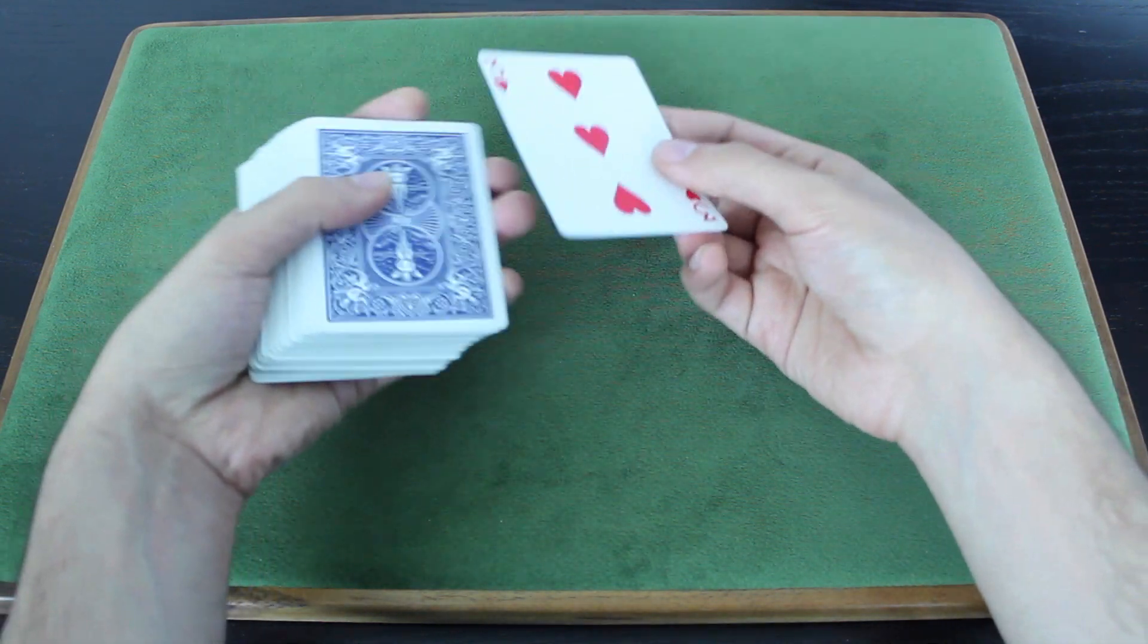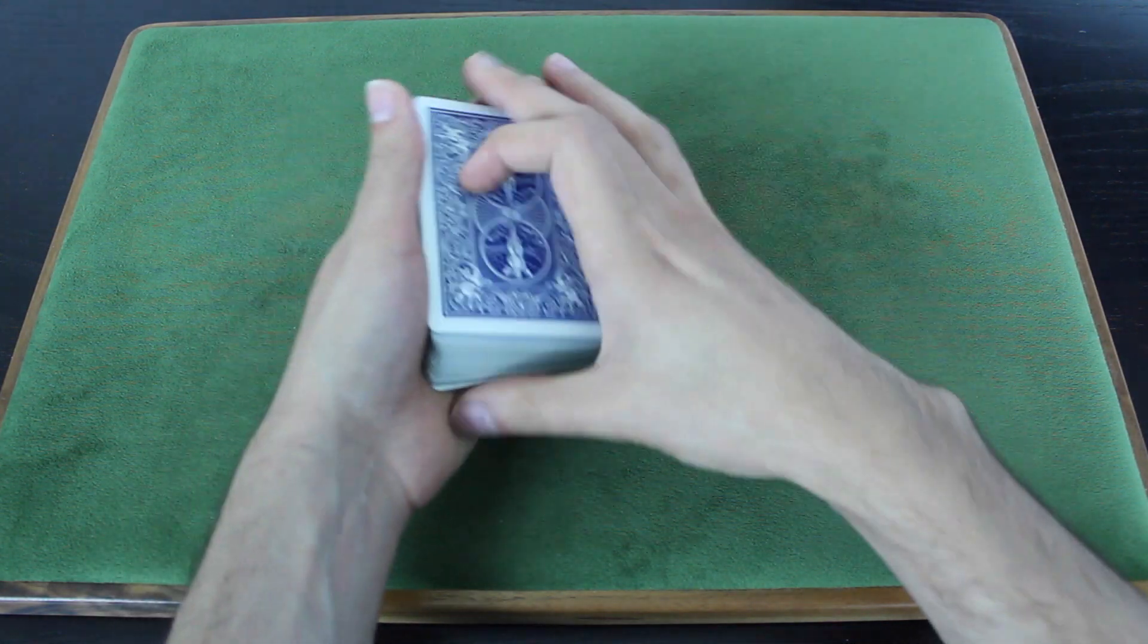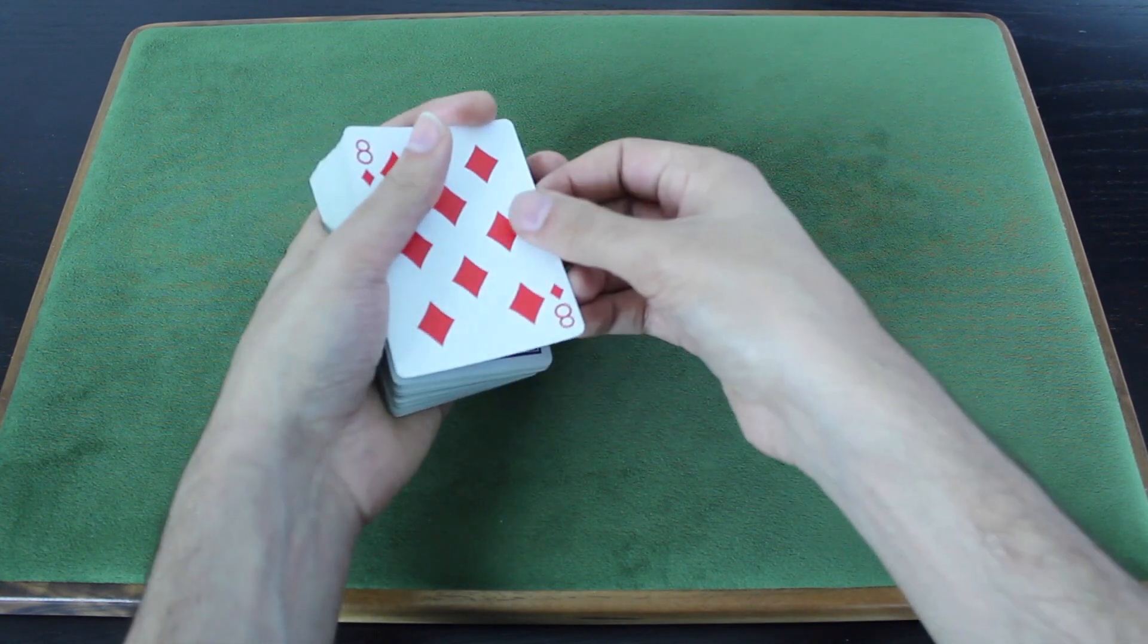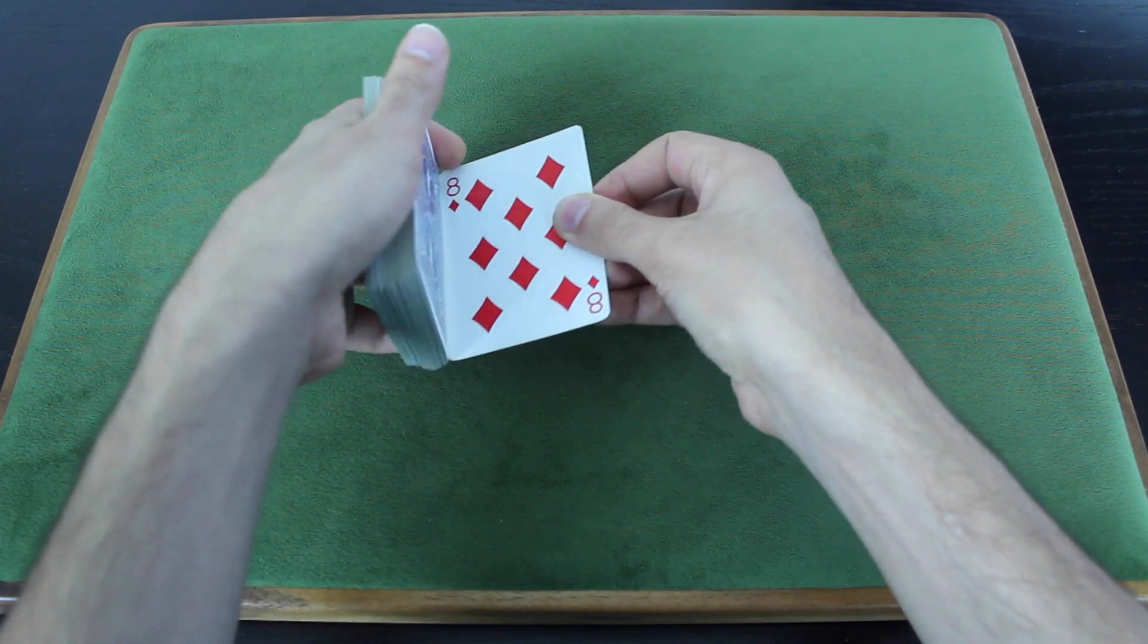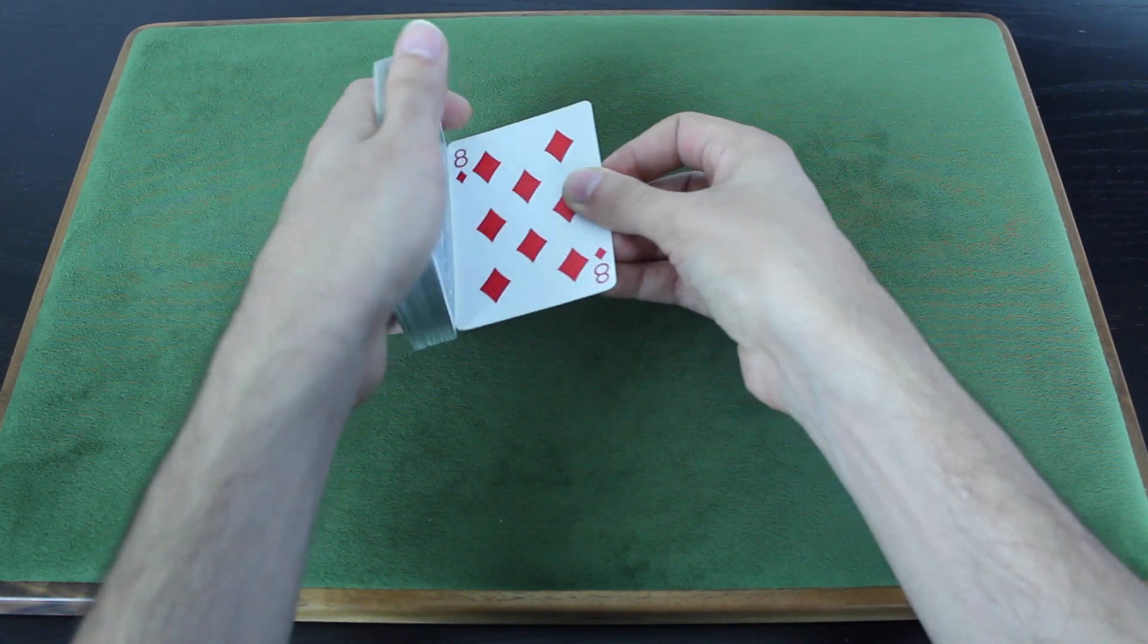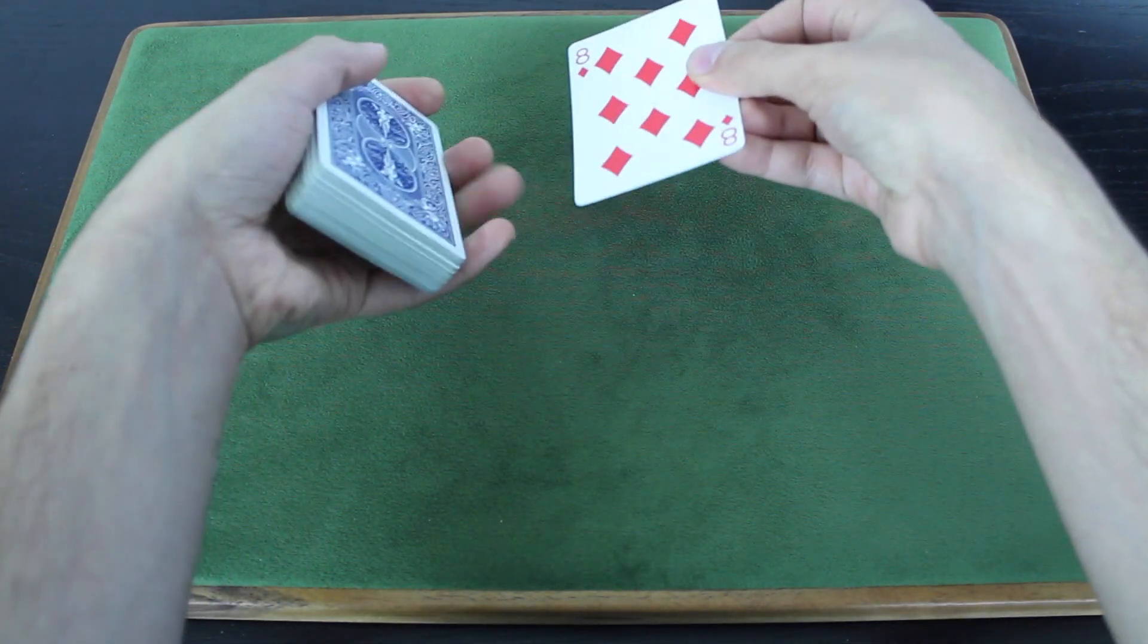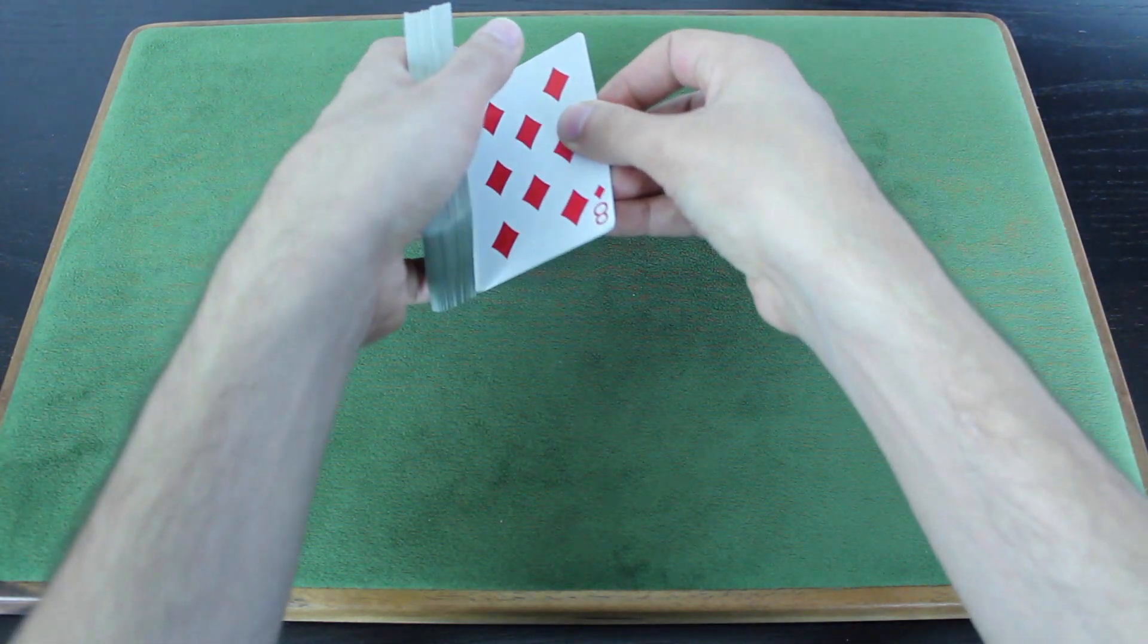But let me break that down in a bit more detail and show you more specifically the finger positions that you're going to use. So you're in this position. You've slid that card to the right. You start to close the gap in between the double and the deck. And your pinky, ring, and middle finger contact the back of these two cards.